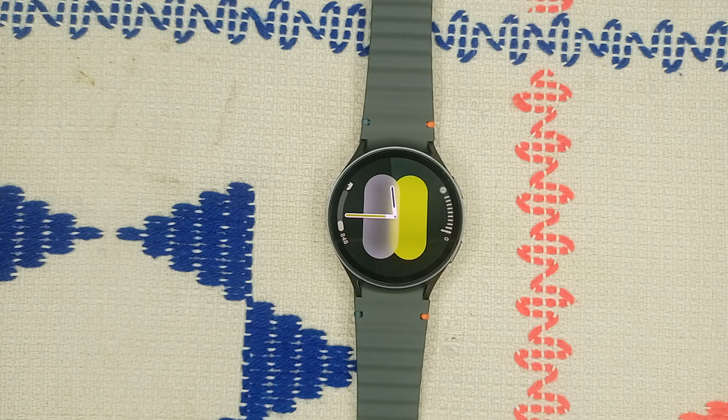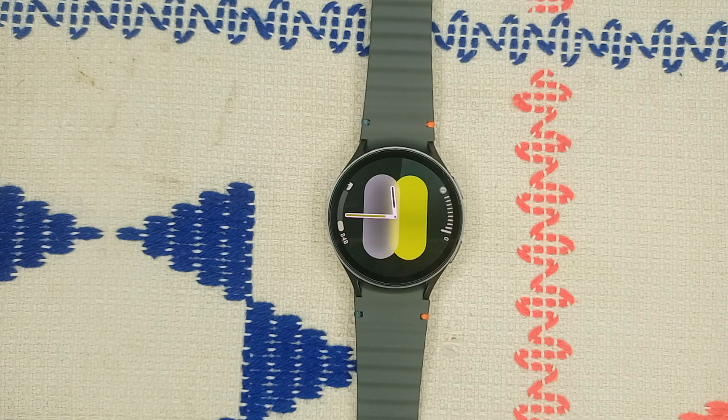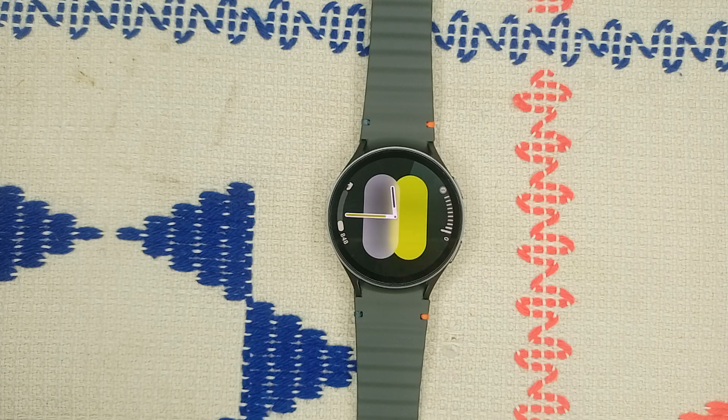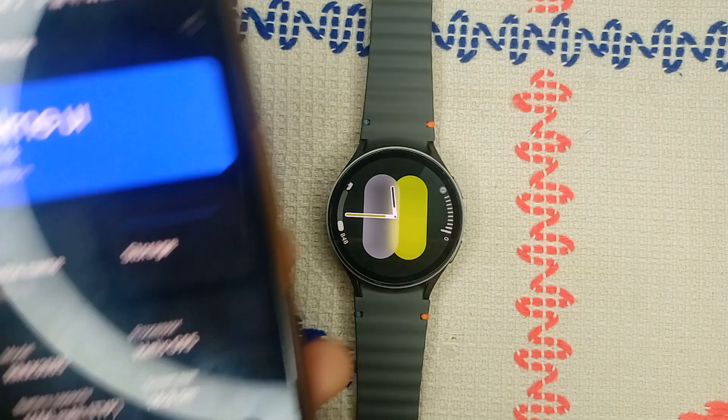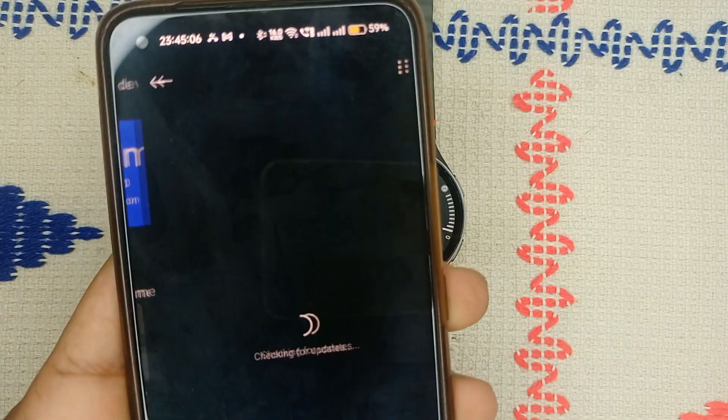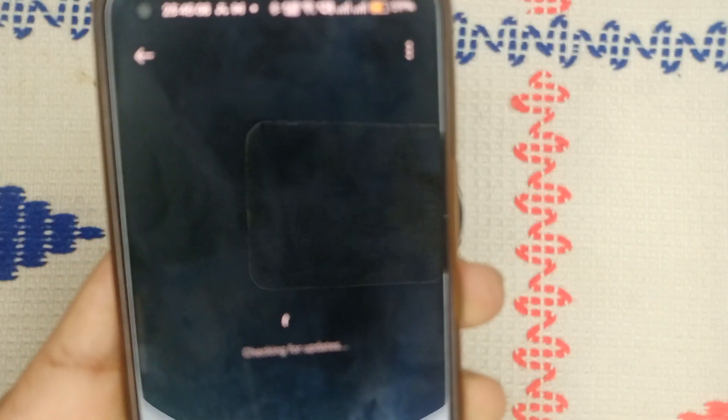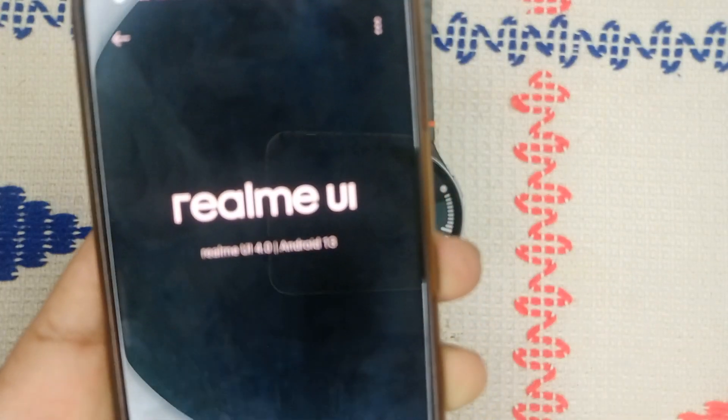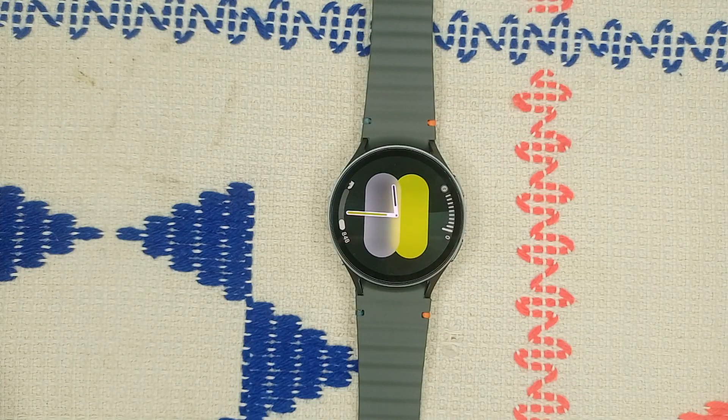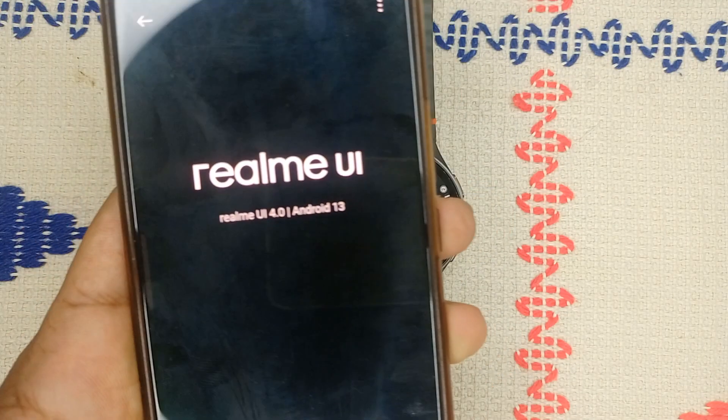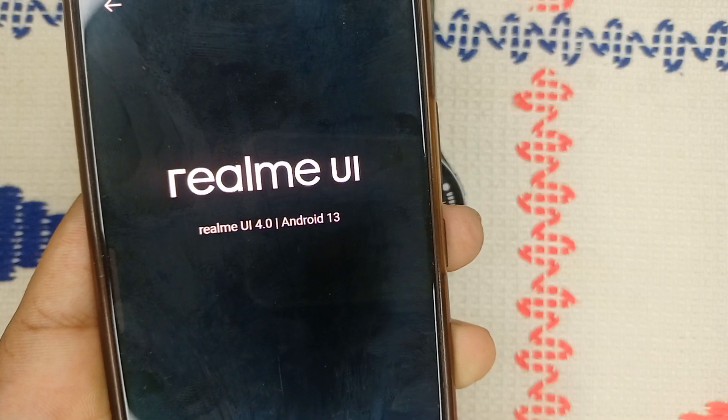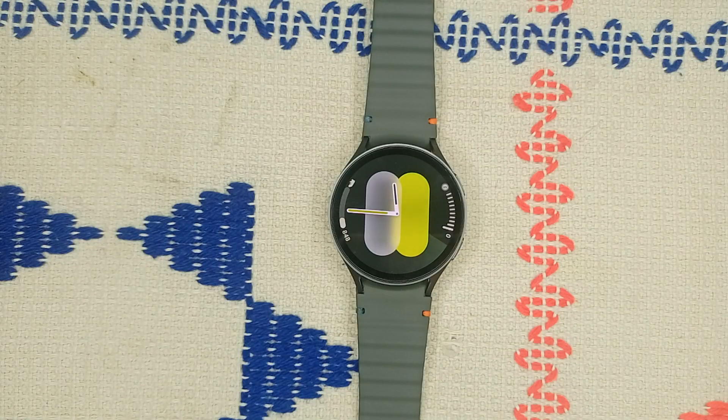You can simply open the settings of your phone and then go to About Software or Software Update. Here you can find your phone software version. If your phone software is higher than Android version 7, you can easily use it. My Android version is 13, as you will see on my screen.